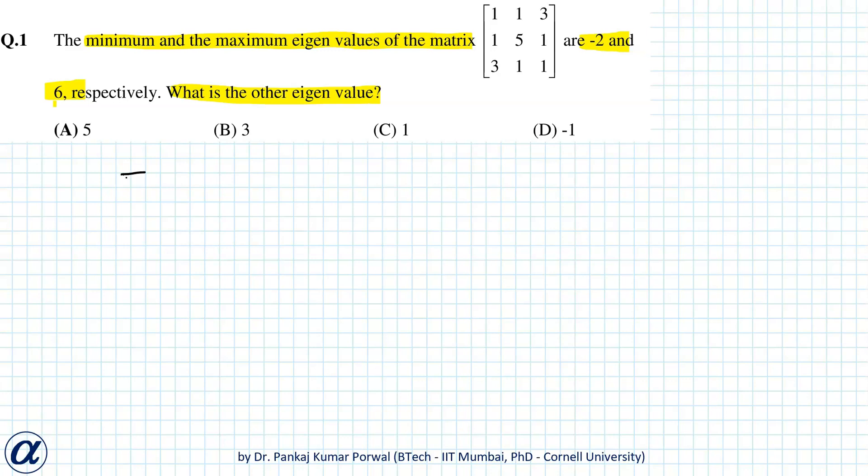That is sigma lambda_i equals to trace and that will be 7, and product of lambda_i equals to determinant of A. So let's check the sum property first.